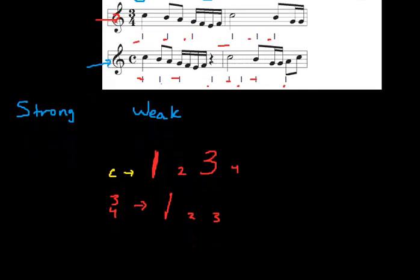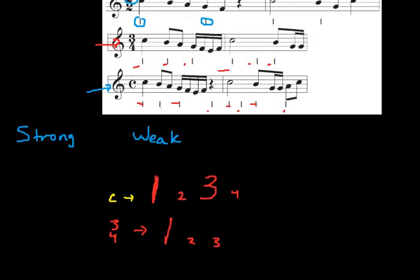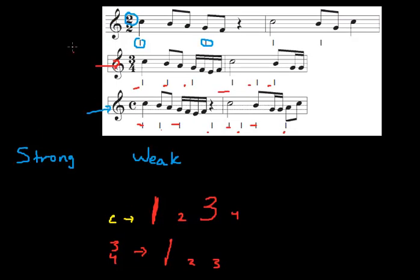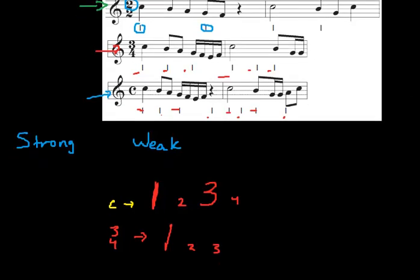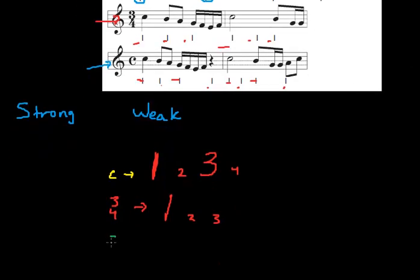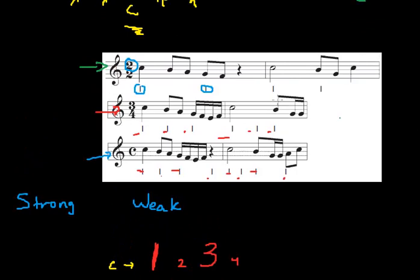And in the measure of 2 beats, the first beat is strong, and the second beat is weak. So this would be 1, 2, 1, 2.